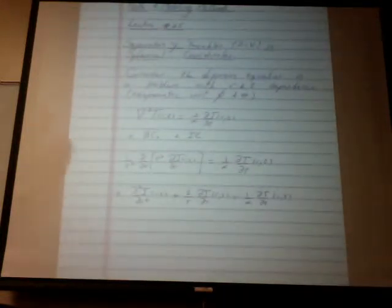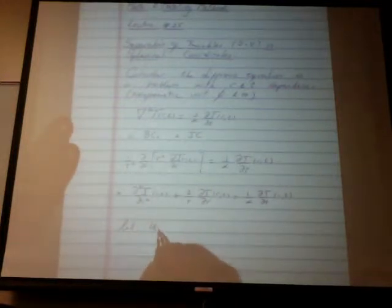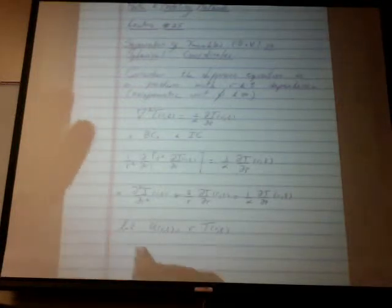There's a neat trick when the dependent variable only depends on R. This applies to diffusion and wave problems. Most problems in spherical coordinates just depend on the radial coordinate, not on the other two angles. So this trick is very useful: we let U equal R times T, doing a simple change of variable.